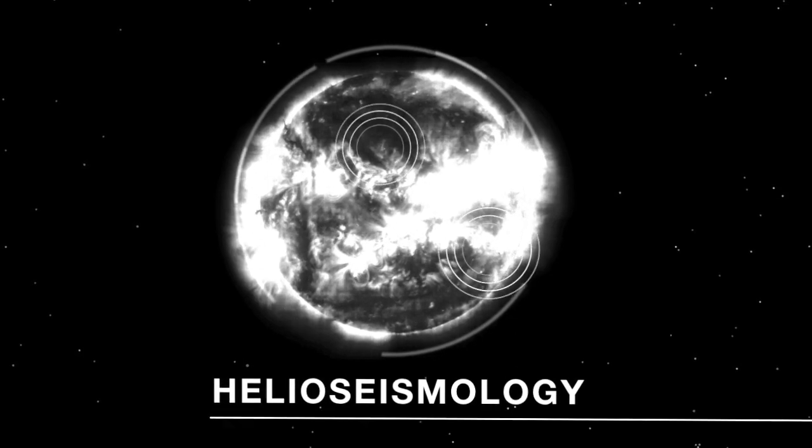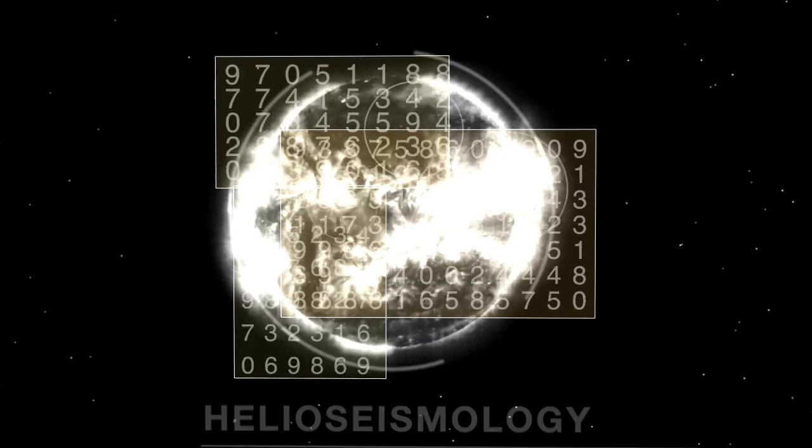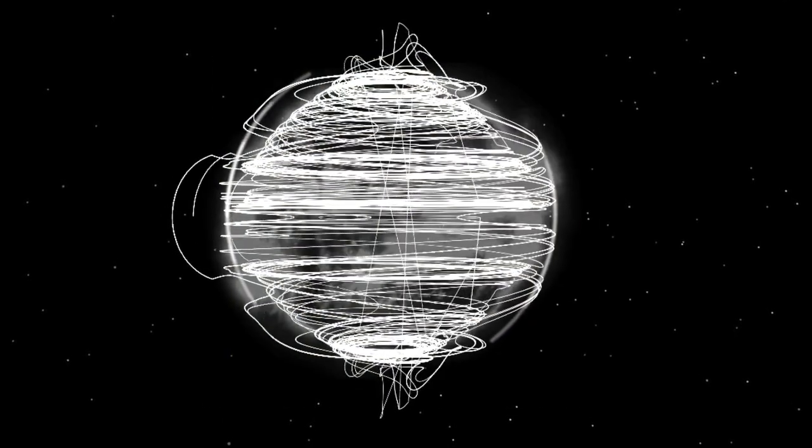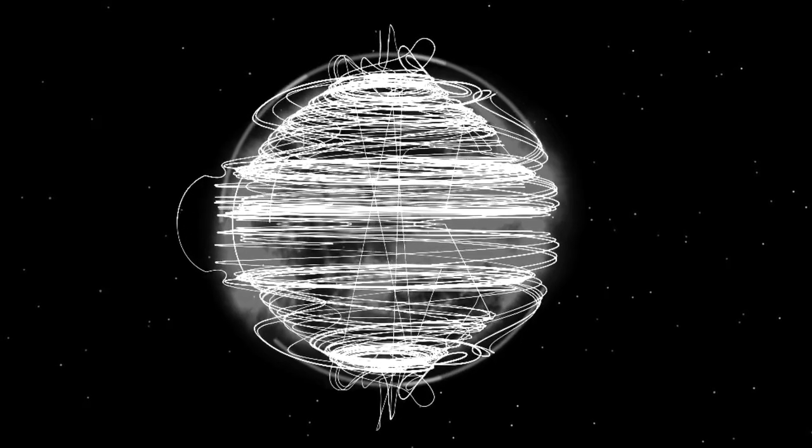The helioseismic refers to the sound waves that we can measure at the surface of the Sun. When we carefully analyze them, we can look inside the Sun and see what's happening under the surface of the Sun and even what's happening on the other side of the Sun.